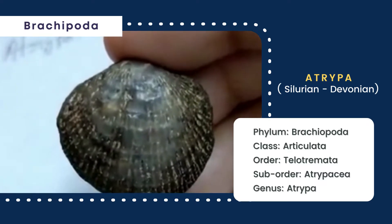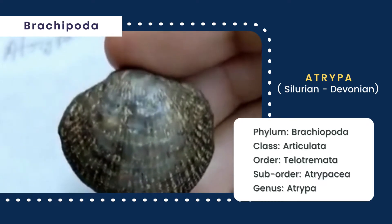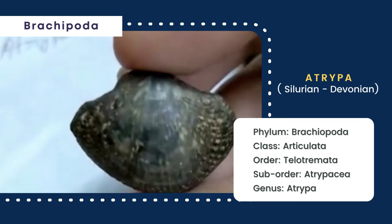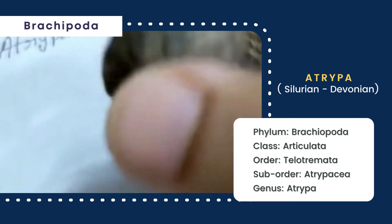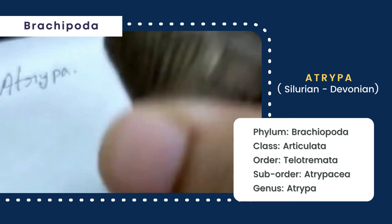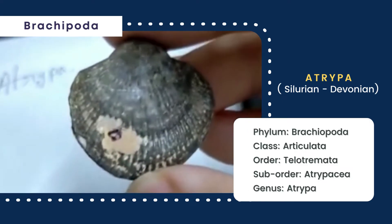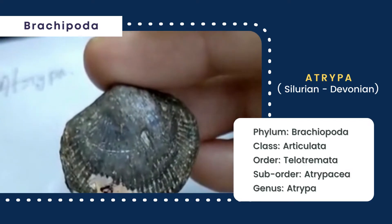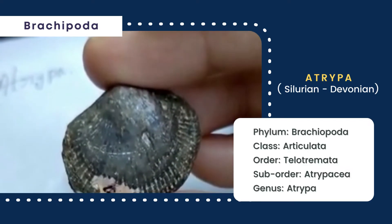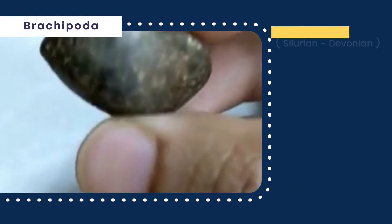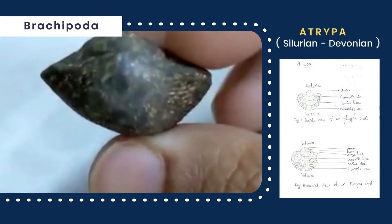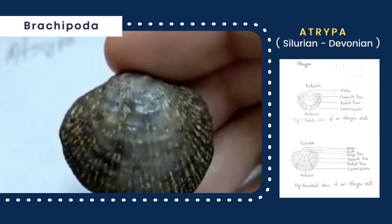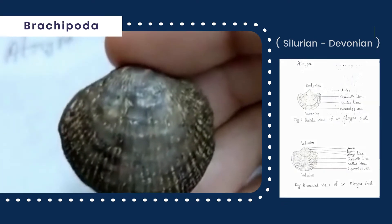Next is Atrypa, whose shell is sub-circular in outline and biconvex, and its width is greater than its length. It is ornamented by densely located radial lines which are crossed by well-marked concentric growth lines. The hinge line is short and slightly curved, and the pedicle valve is convex near the umbo and depressed in front.